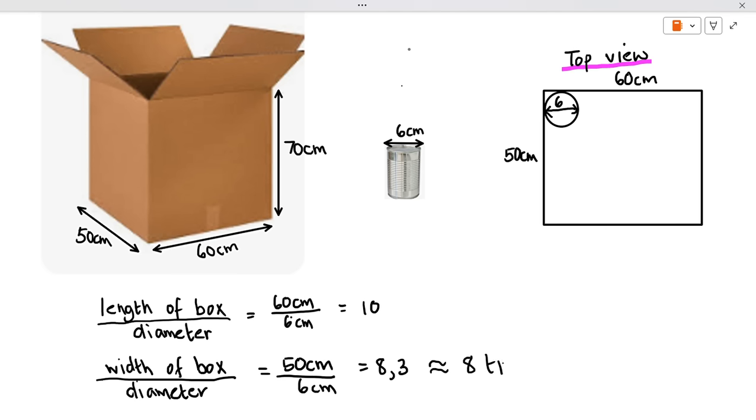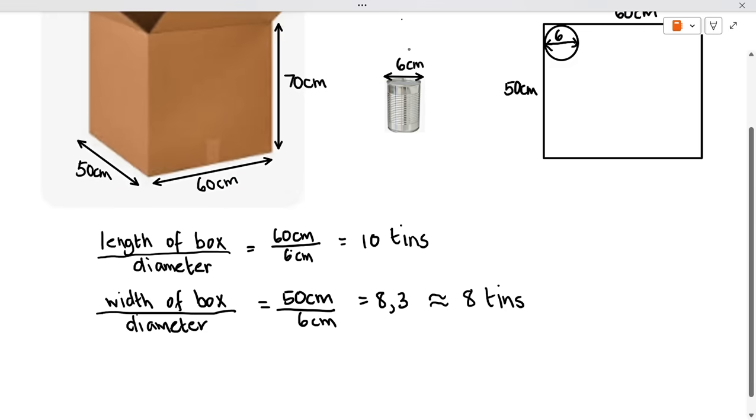And above it was approximately 10 tins. So if we're looking at the bottom row, the number of tins would be 10 times 8, and that would give me 80 tins.